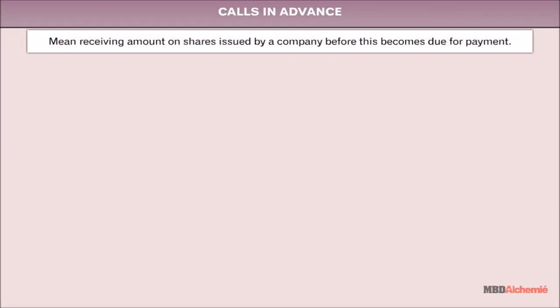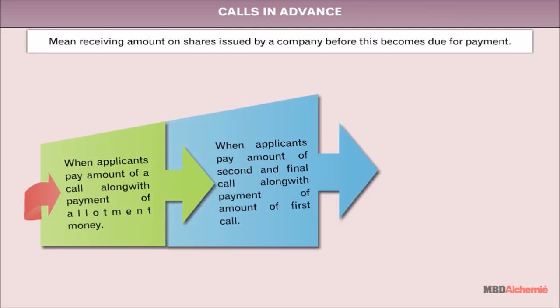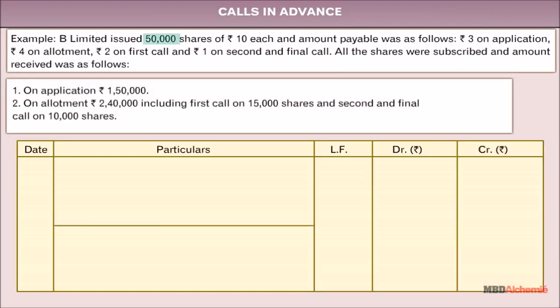Calls in Advance mean receiving an amount on shares issued by a company before it becomes due for payment. Calls in Advance arise when applicants pay the amount of a call along with payment of allotment money, or when applicants pay the amount of the second and final call along with payment of the first call, or when shares are oversubscribed and applicants are allotted shares on a pro-rata basis.